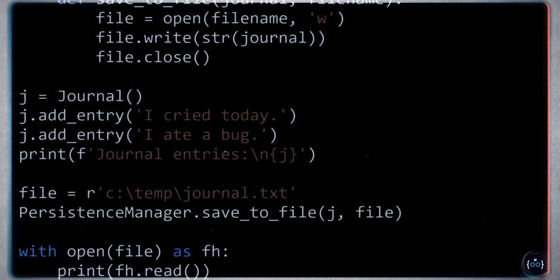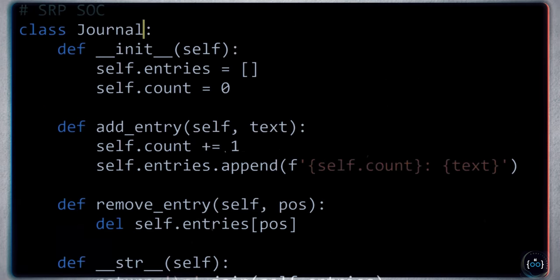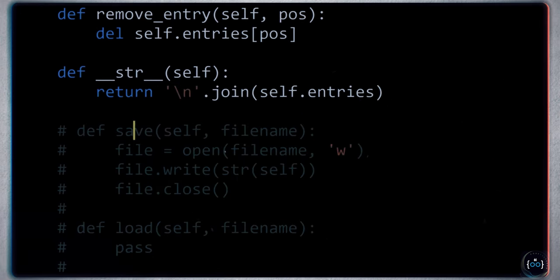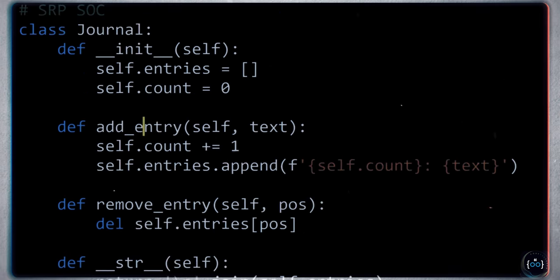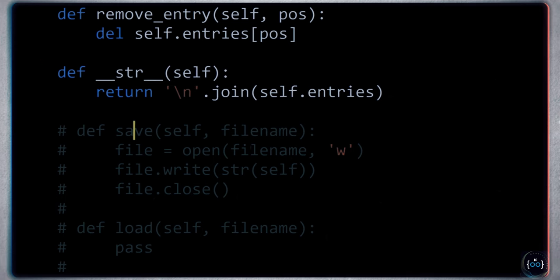The takeaway of this lesson is that you don't want to overload your objects with too many responsibilities. There's something called an anti-pattern — the opposite of a pattern. One anti-pattern is called the 'god object': when a developer, perhaps a newbie, puts everything into a single class — managing entries, persistence, additional functionality — resulting in a massive class. This is why we call it an anti-pattern. The Single Responsibility Principle prevents you from making god objects, enforcing the idea that a class should have a single reason to change, related to its primary responsibility.